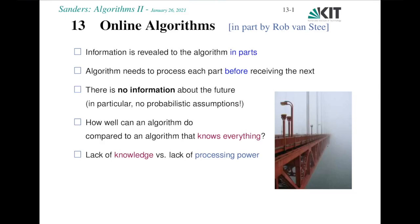Welcome to the chapter on online algorithms in our course Algorithms 2. So what are online algorithms? The situation we are facing in many practical applications is that we don't know the future, or for other reasons — maybe because of fog — we can't see all the information that we would like to have to make a decision. Computers also have to make decisions, so we have to think about algorithms handling this situation.